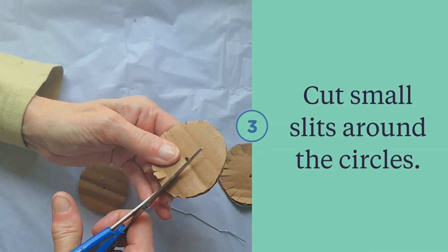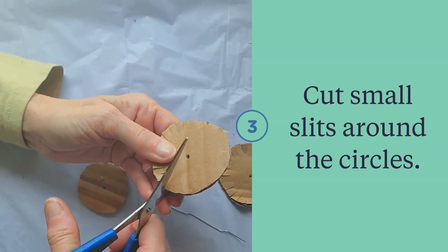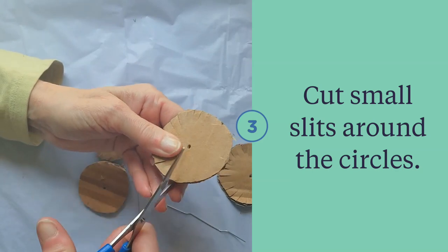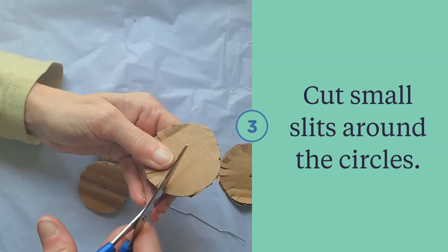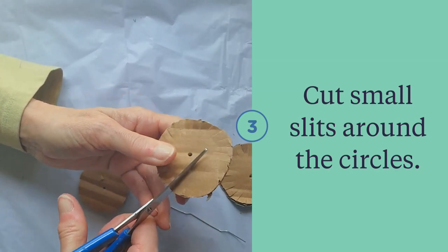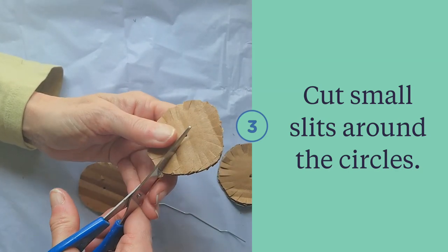Now I also found that you don't have to do four. The four circles make your flower very thick. You could actually get away with two or three circles.